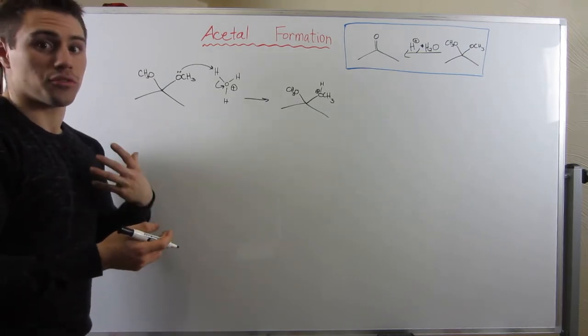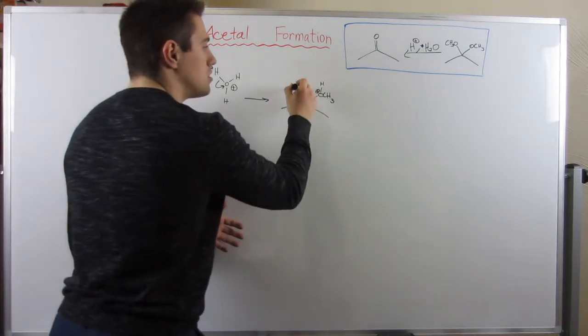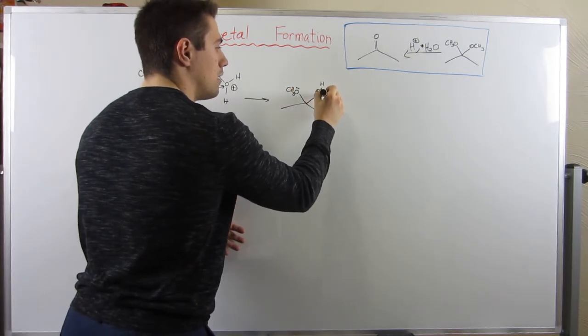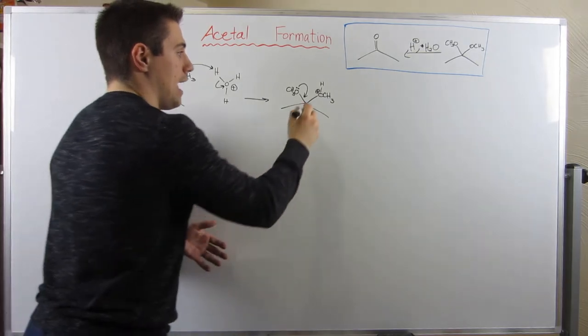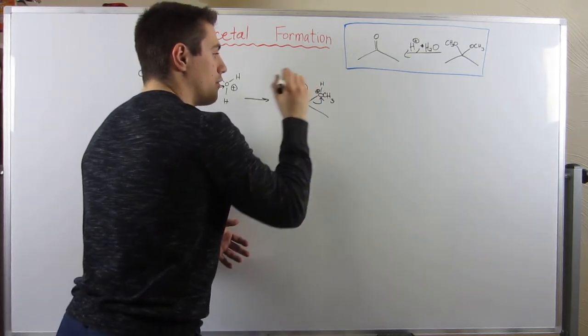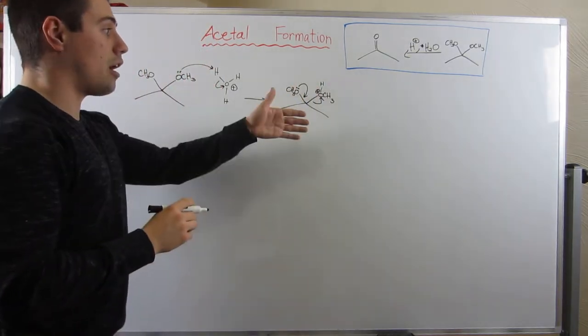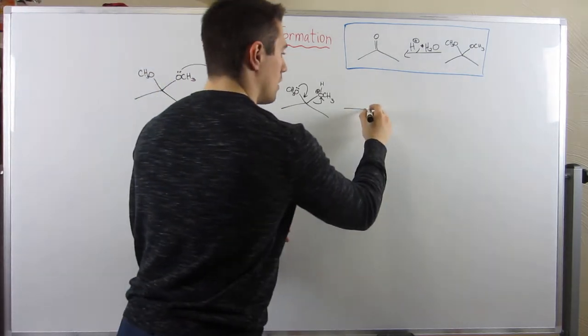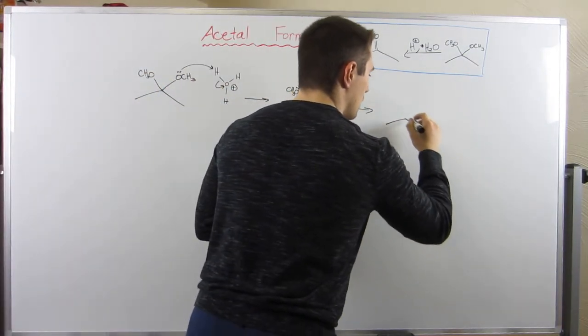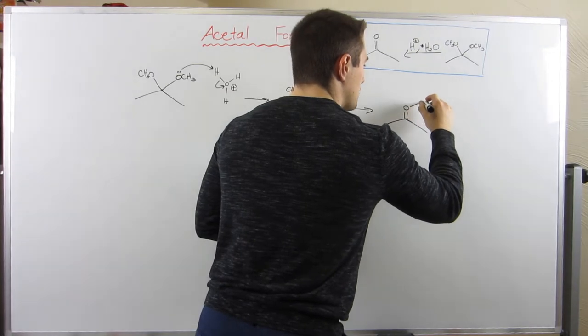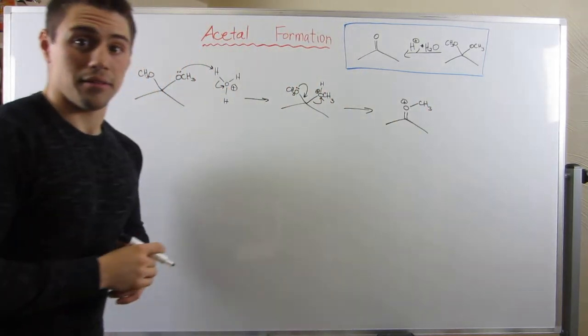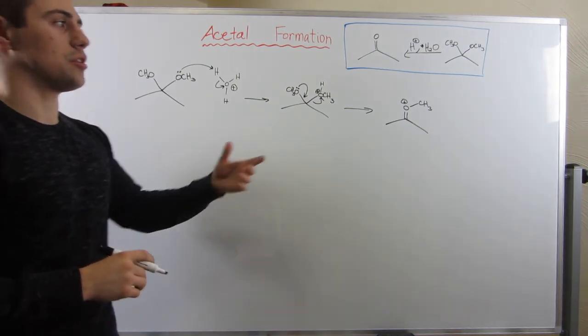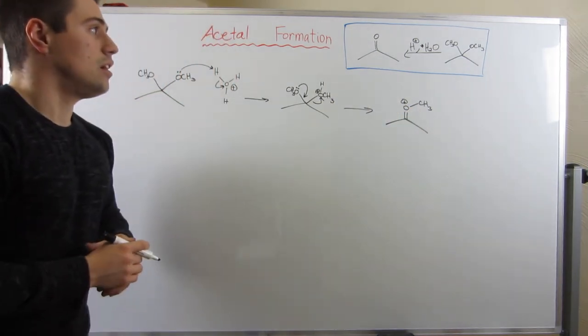So we kind of need him to leave. What's his driving force for getting out? What we're going to do is take an electron pair on the other ether, swing those puppies down, and that is going to be enough motivation for this guy to kick off to leave as methanol. And that is going to leave us with this carbonyl looking intermediate. But it's not exactly a carbonyl because we have a CH3 group there.